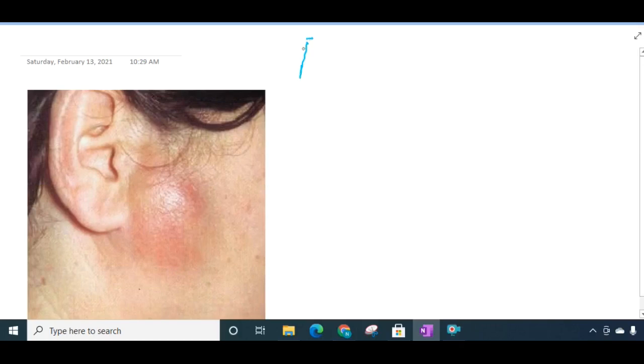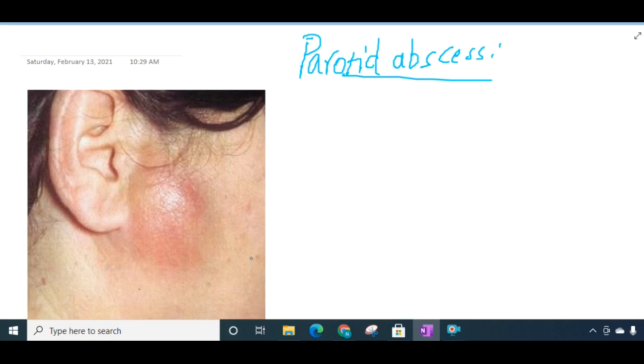Hello friends, let us now learn some important points about parotid abscess. Parotid abscess is suppuration of the parotid space. The deep cervical fascia splits into two layers, superficial and deep layers, which encloses the parotid gland. So the parotid gland lies between the superficial and deep fascia.